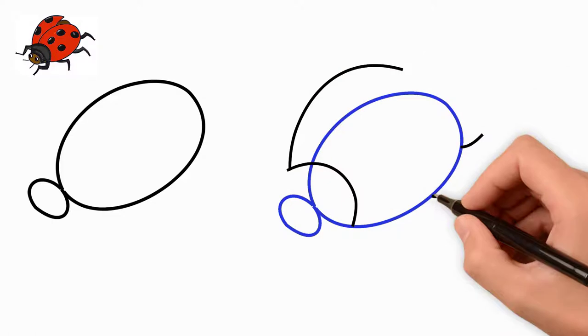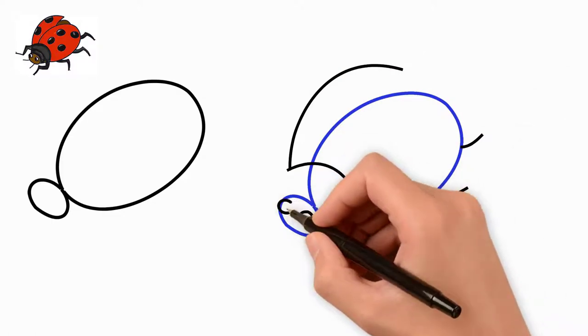Draw three small paws. Draw a wing along the torso. We draw eyes.